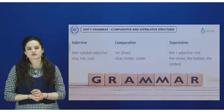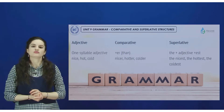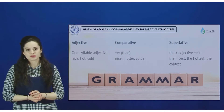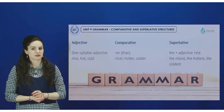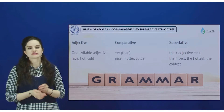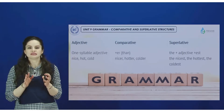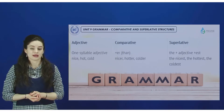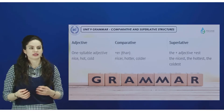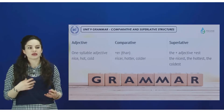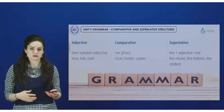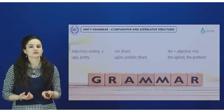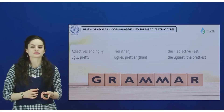For the superlative form of simple words with one or two syllables, just add the ending -est and the definite article 'the'. So it will be: the nicest, the hottest, the coldest. Here is how you work with simple words.